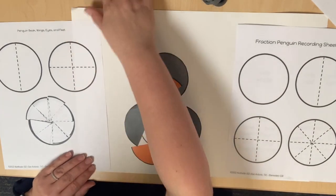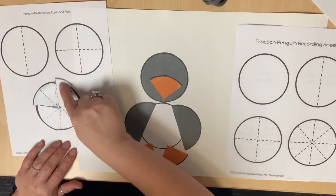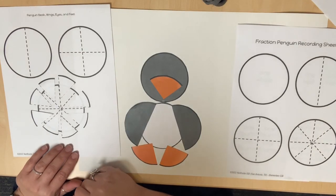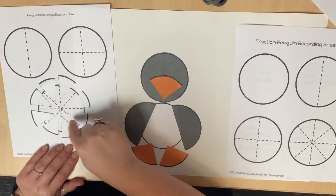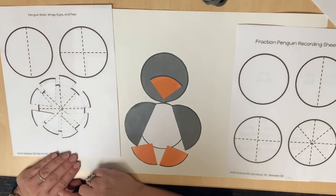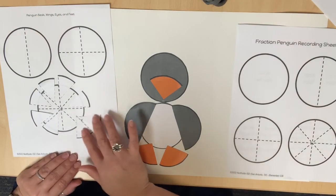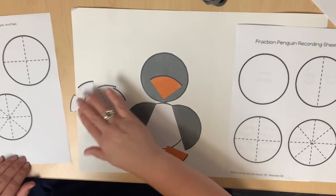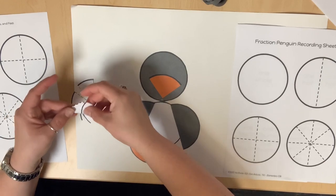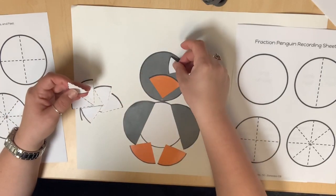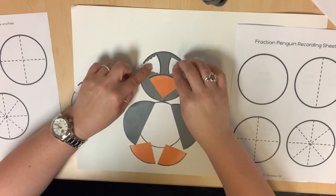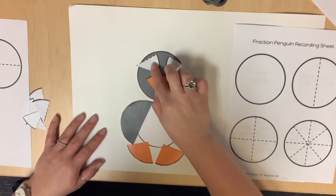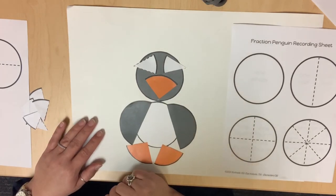Have students cut out the circle that has been partitioned into eighths. What do you notice about this whole circle? It has lines that are partitioning the circle into eight equal parts. How many equal parts do you have now? There are eight. How can we name each part? Each part is one eighth because there are eight total pieces in the whole circle. Two of the one eighths should be glued to represent the eyes.